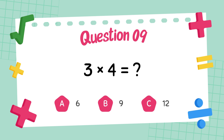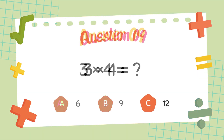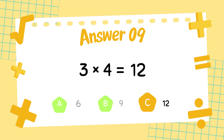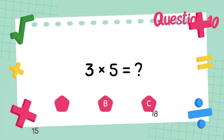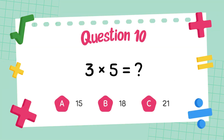What is 3 times 4? The answer is 12. What is 3 times 5?